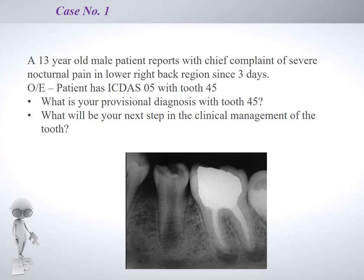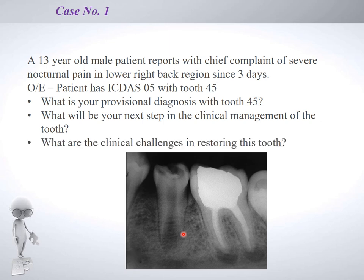The tooth of interest shows a deep caries lesion with pulpal involvement. We also see that the roots are not completely formed — the apex is open. The provisional diagnosis is acute symptomatic irreversible pulpitis due to the nocturnal pain. The clinical management is root canal treatment, and the clinical challenge is obturating a tooth with an open apex.